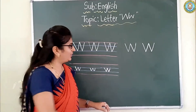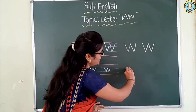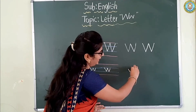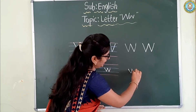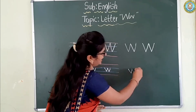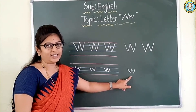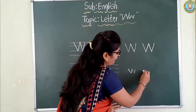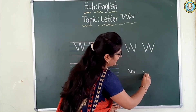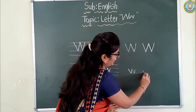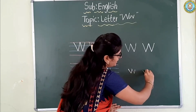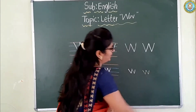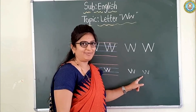Now, first you write the slanting line, and again go back with another slanting line, and again come down with another slanting line, and go up with another slanting line. Which letter is it? Letter W. Which letter is it? Letter W.